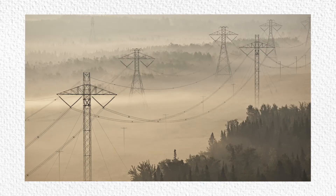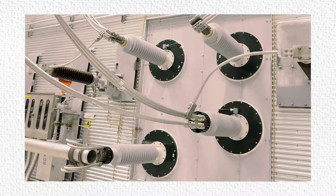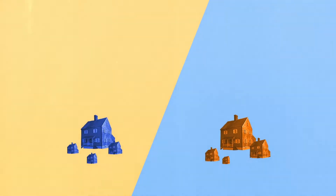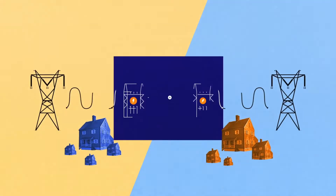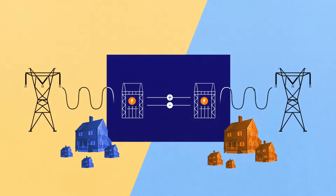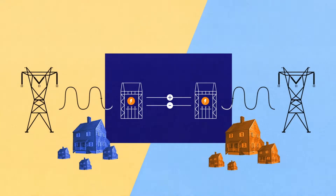One particularity of Hydro-Québec's grid is that most interconnections with neighboring systems have a DC segment. The aim here is to create a buffer zone between the Quebec and neighboring systems, while enabling electrical power to be exported.